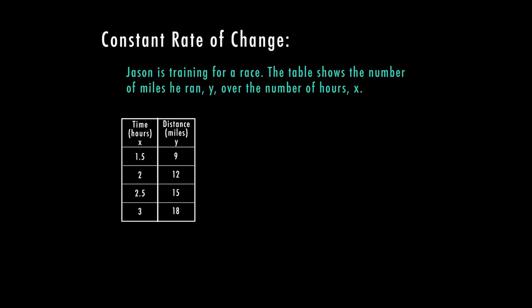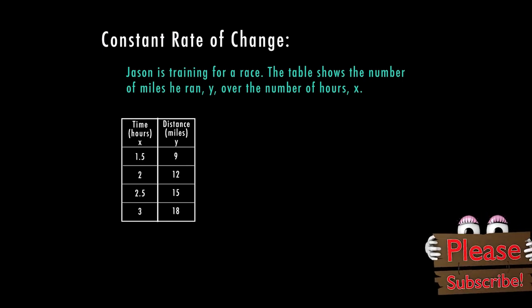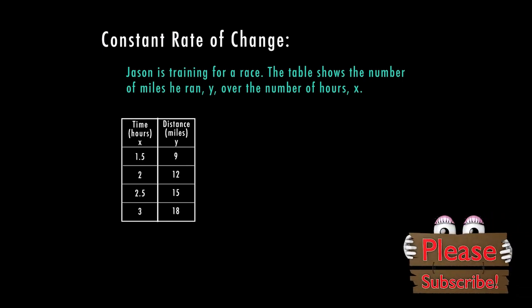And we also have had videos over independent and dependent variables. Y is always dependent on x. And so if time is involved, usually time is going to be your x. And if distance is involved, usually distance is going to be your y because the amount of distance depends on the amount of time. So let's go ahead with this table for Jason. And we want to answer a few questions.